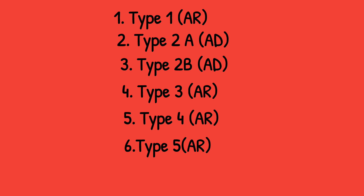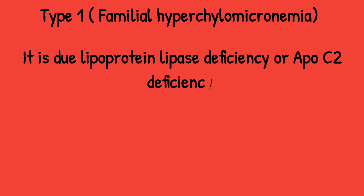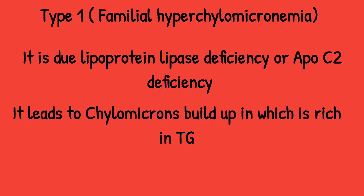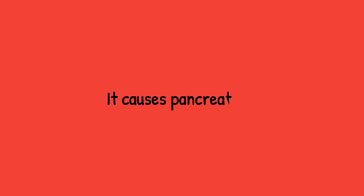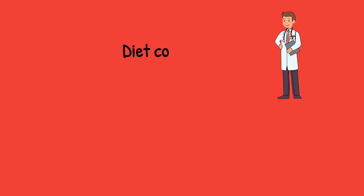Type 1 is also called familial hyperchylomicronemia. There is deficiency of lipoprotein lipase or apoC2. As the name suggests, there is a buildup of chylomicrons, which are rich in triglycerides. High triglycerides can cause pancreatitis — always remember this. Treatment mostly affects children; diet control is first-line, and if not improved, drugs can be used.